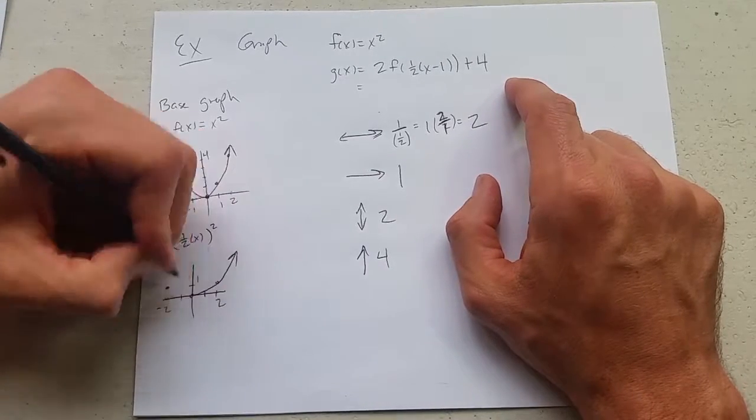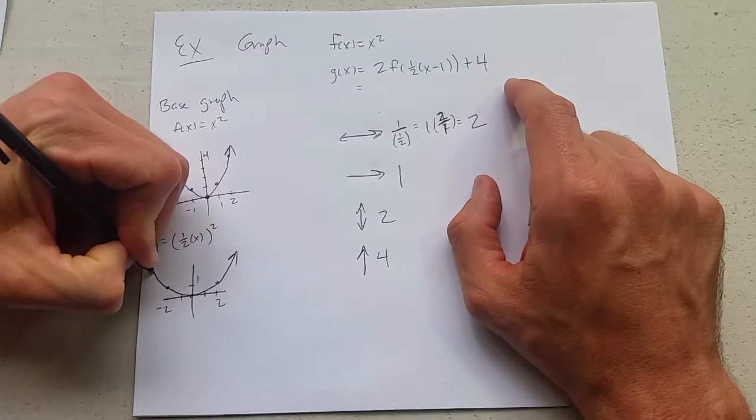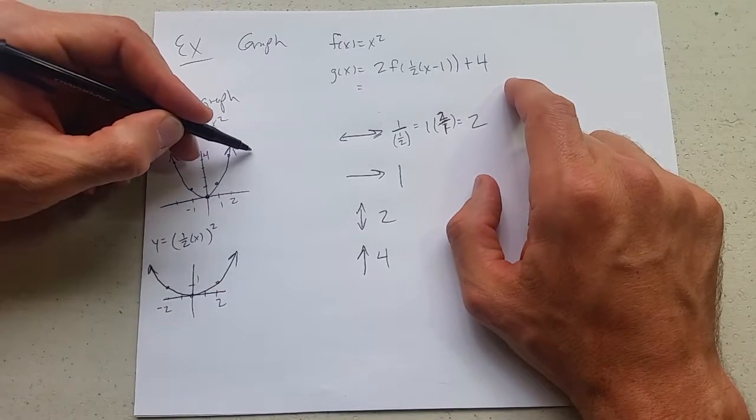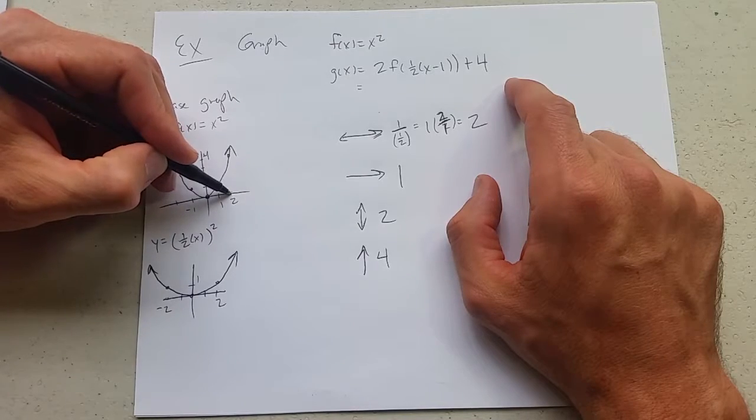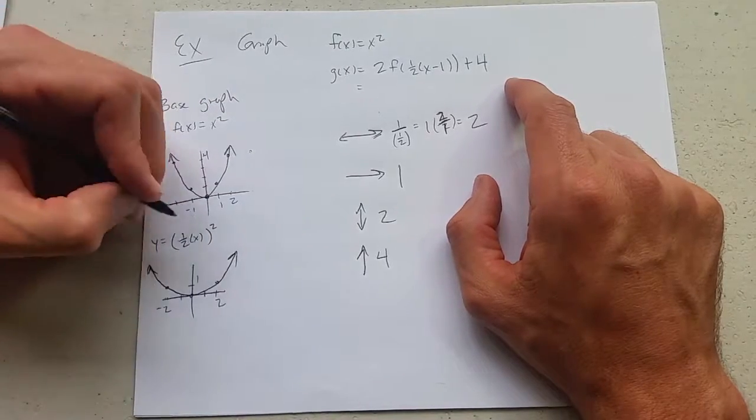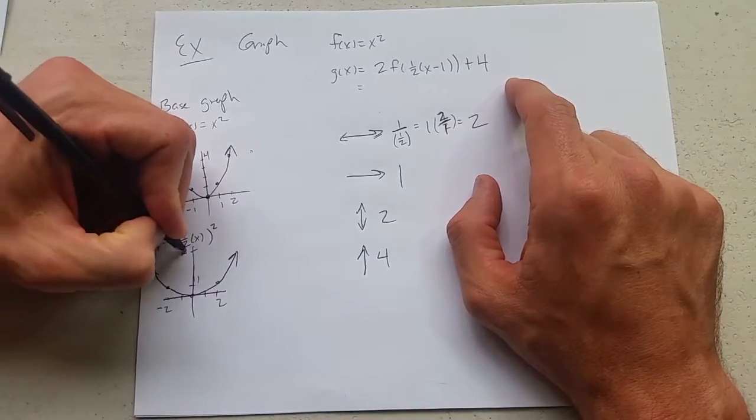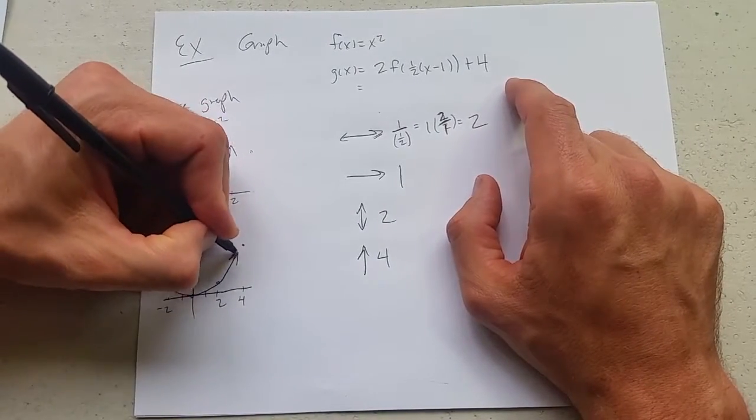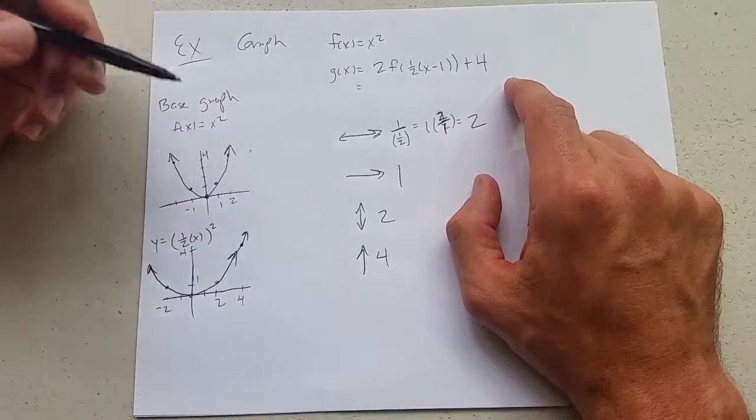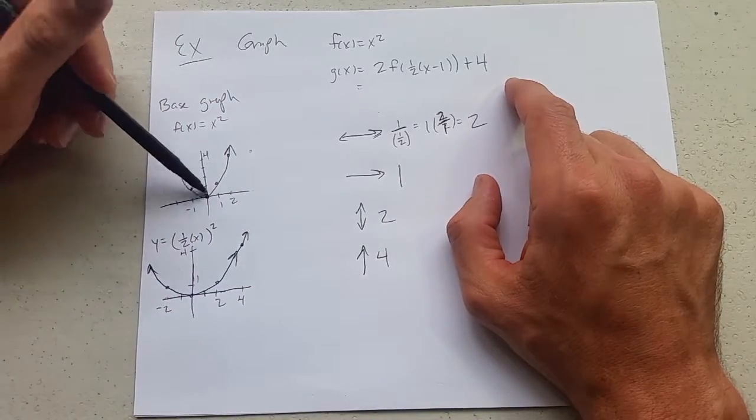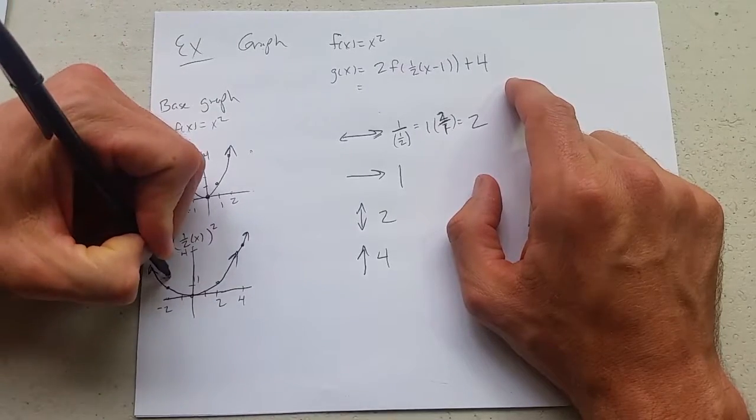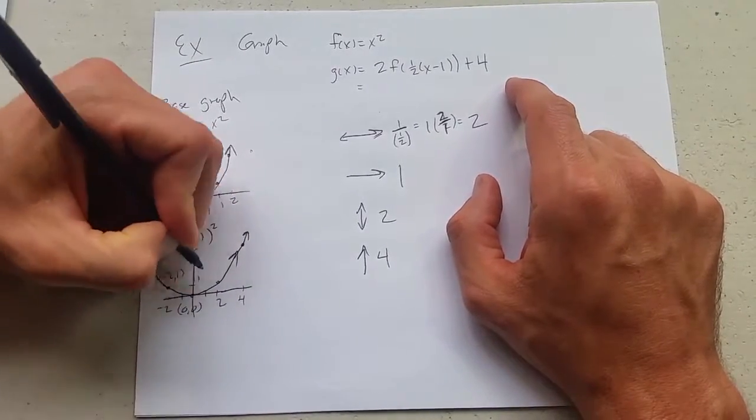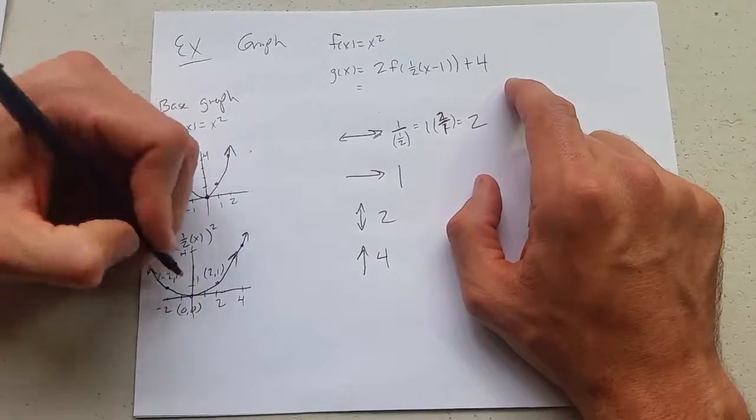I'm only going to keep track of these three points instead of all five. I could keep track of this point, it would just basically move double. Two times two is four, so it would move out to here to four. If I really wanted to go up to (4,4) I'd have the point right there, but I'm going to just keep track of a little bit less information, just going with three points here. So we have (-2, 1), (0, 0), (2, 1), these three points.